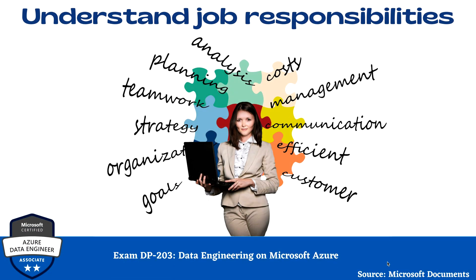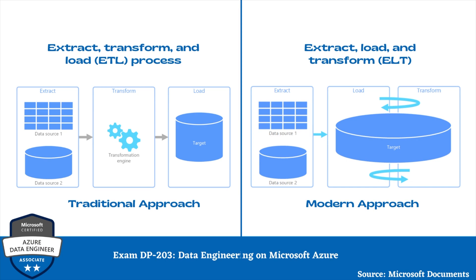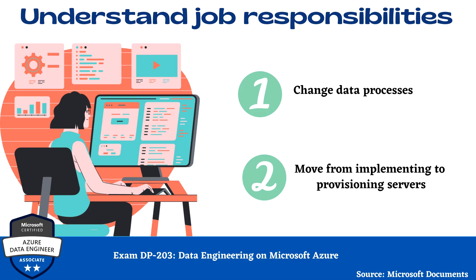Now we are going to discuss understanding job responsibilities. There are two key points to consider: changing data processes, and moving from implementing to provisioning servers. We used to follow the ETL approach — extract, transform data, then load into the destination. But with cloud solutions, this changes. We now follow an ELT approach — extract, then load, and after that perform the transformations. The data is immediately extracted and loaded into a large data repository such as Azure Cosmos DB or Azure Data Lake Storage. This change in process reduces resource contention on source systems, and data engineers can begin transforming the data as soon as the load is complete.